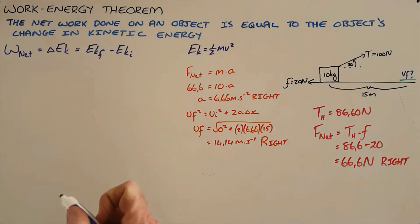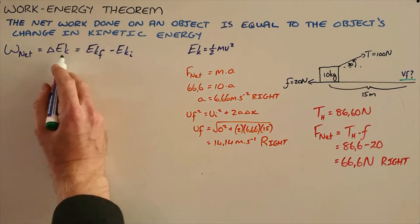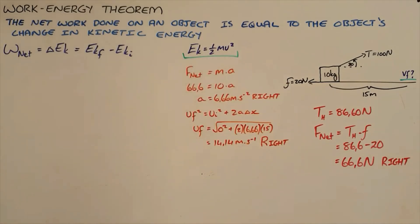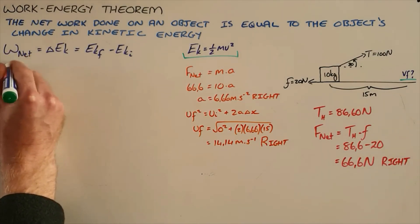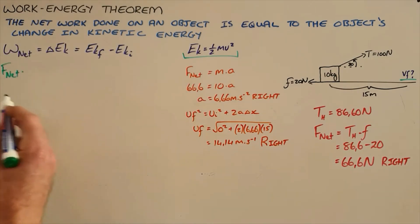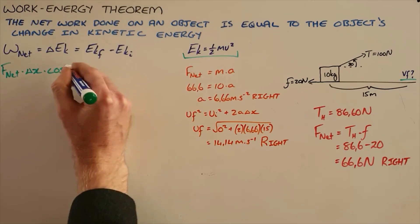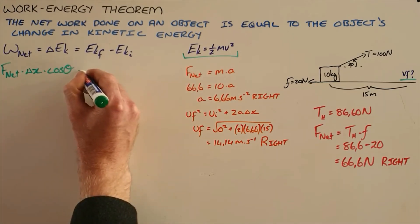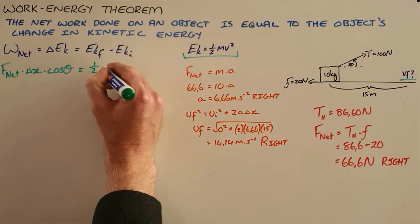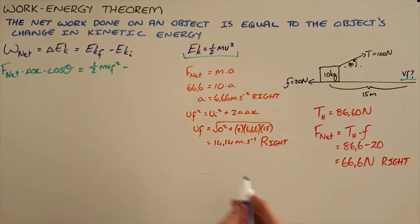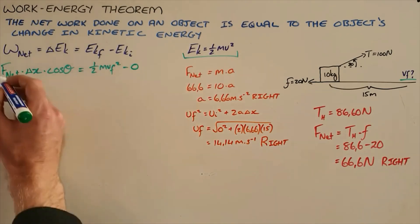Once we understand work, we can use the Work-Energy Theorem, which states that the net work done on an object equals the object's change in kinetic energy: W_net = ΔEK = EK_final − EK_initial. This allows us to use the net force to calculate net work because W_net = F_net × displacement × cosine of the angle between them, and the change in kinetic energy equals ½mv_f² minus the initial kinetic energy. Since the object started from rest, initial KE is zero.